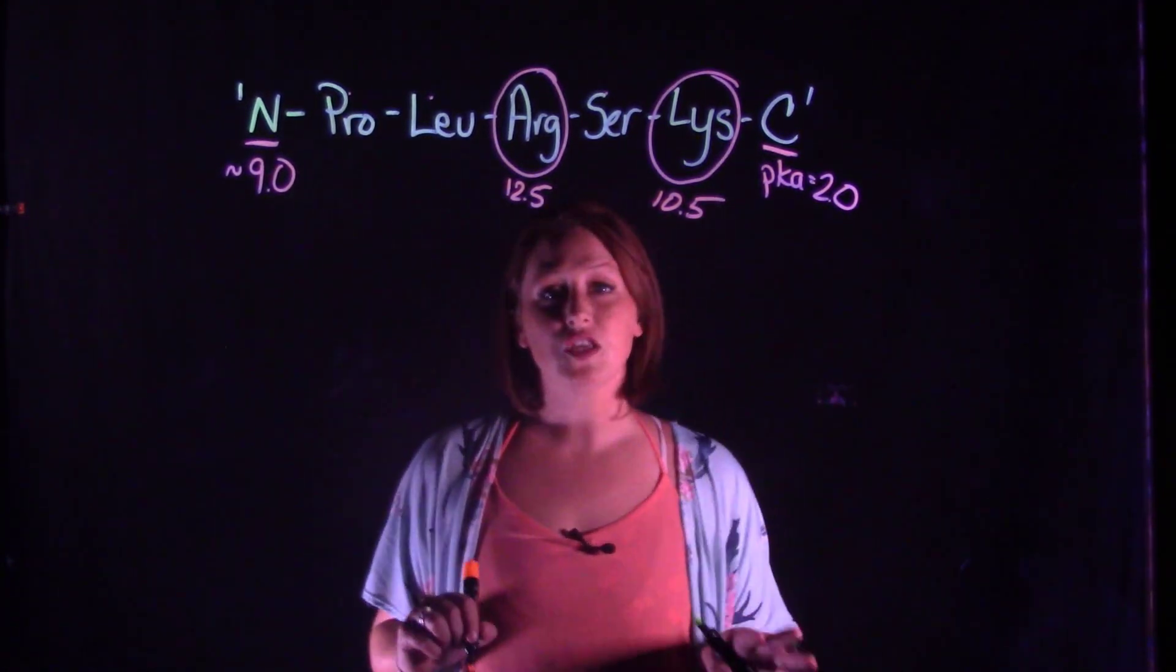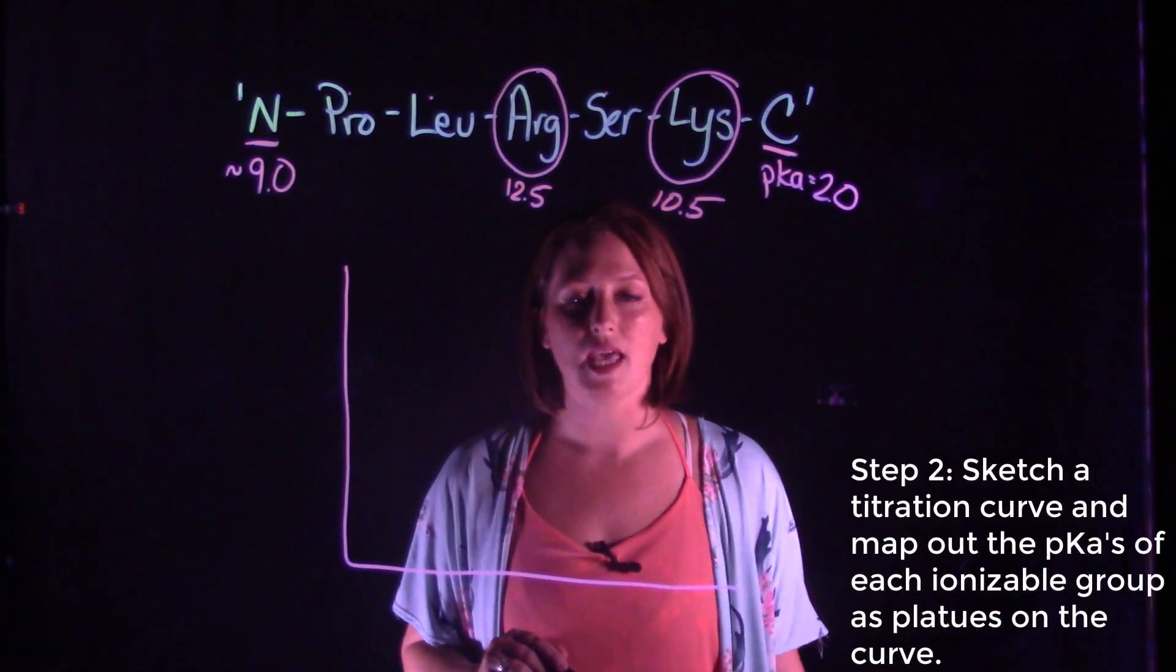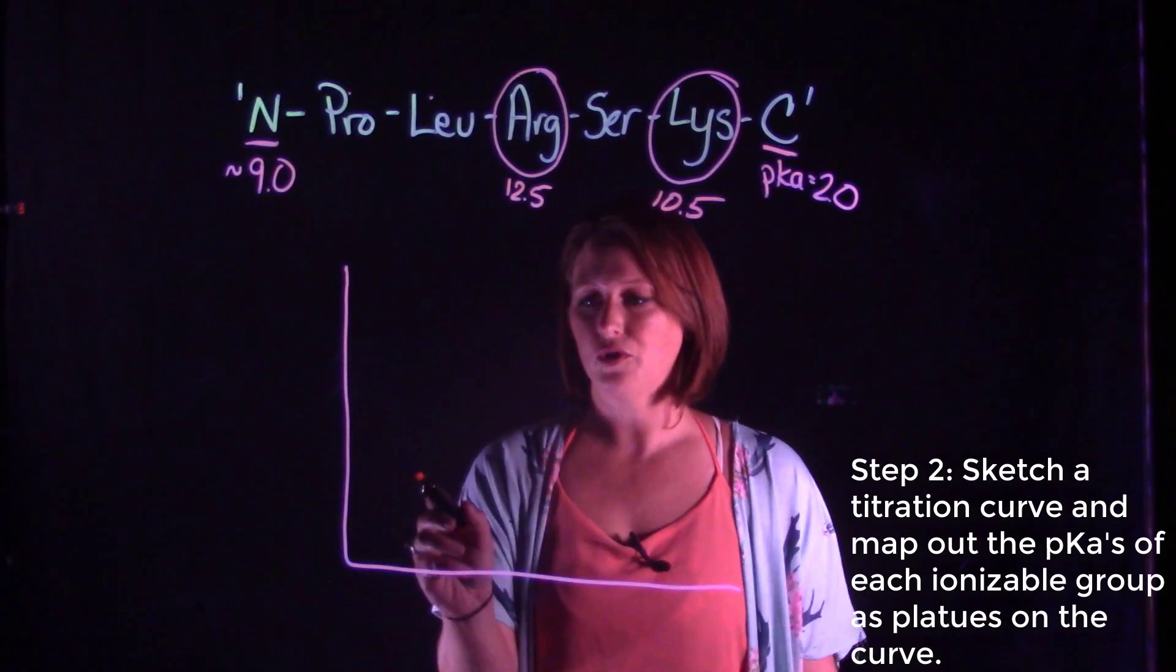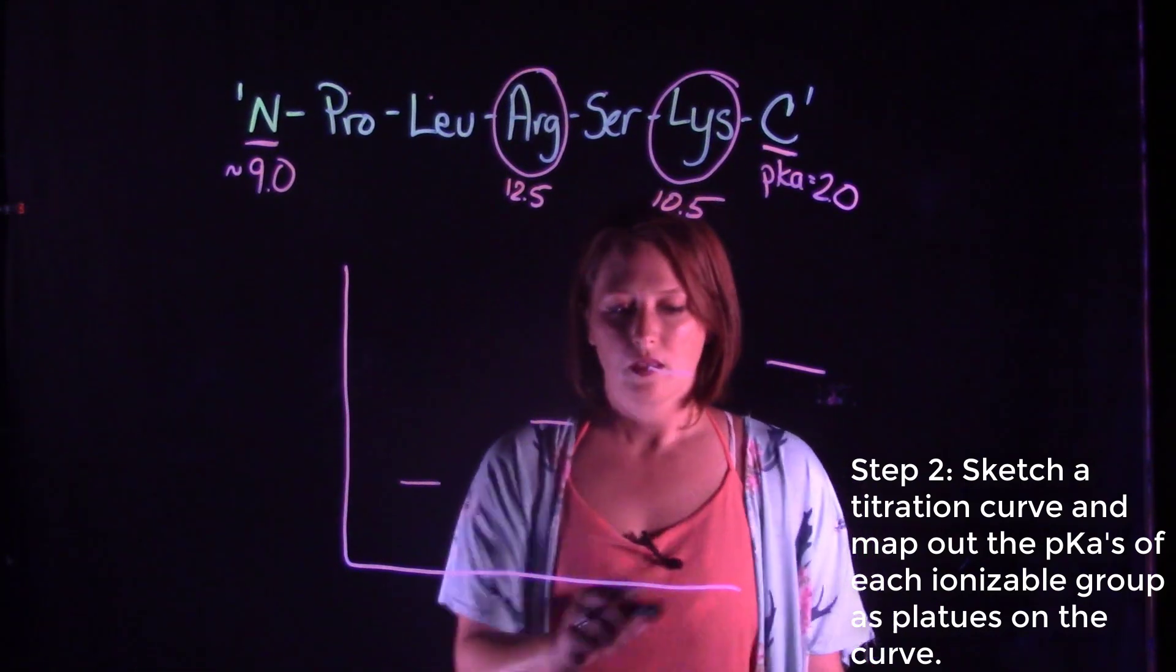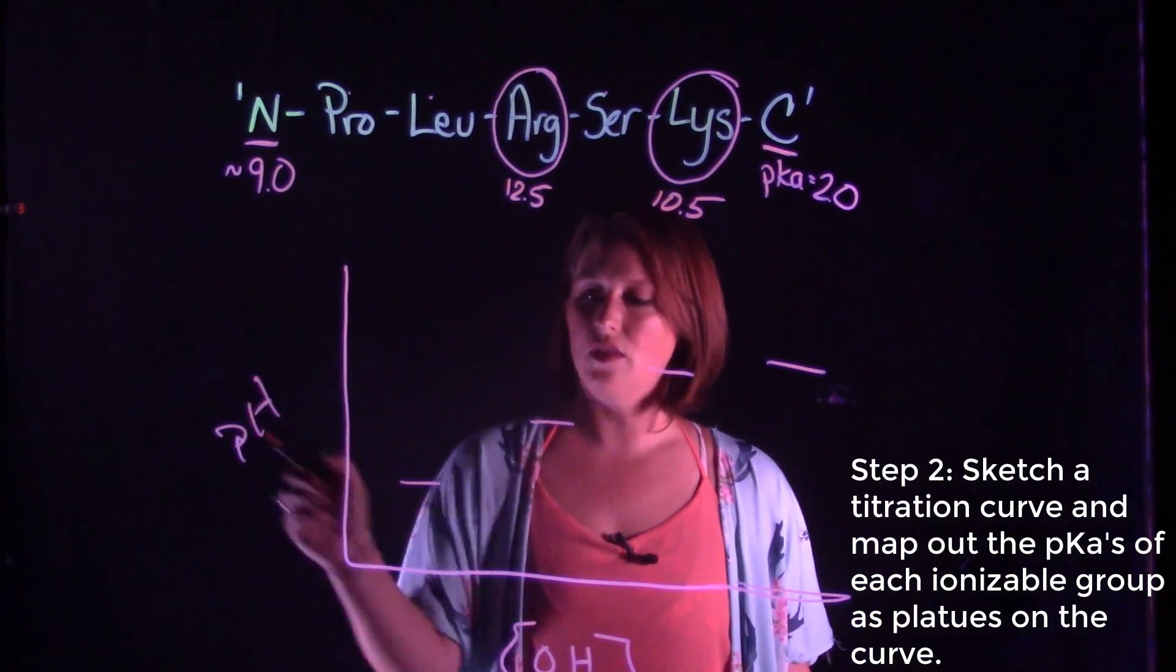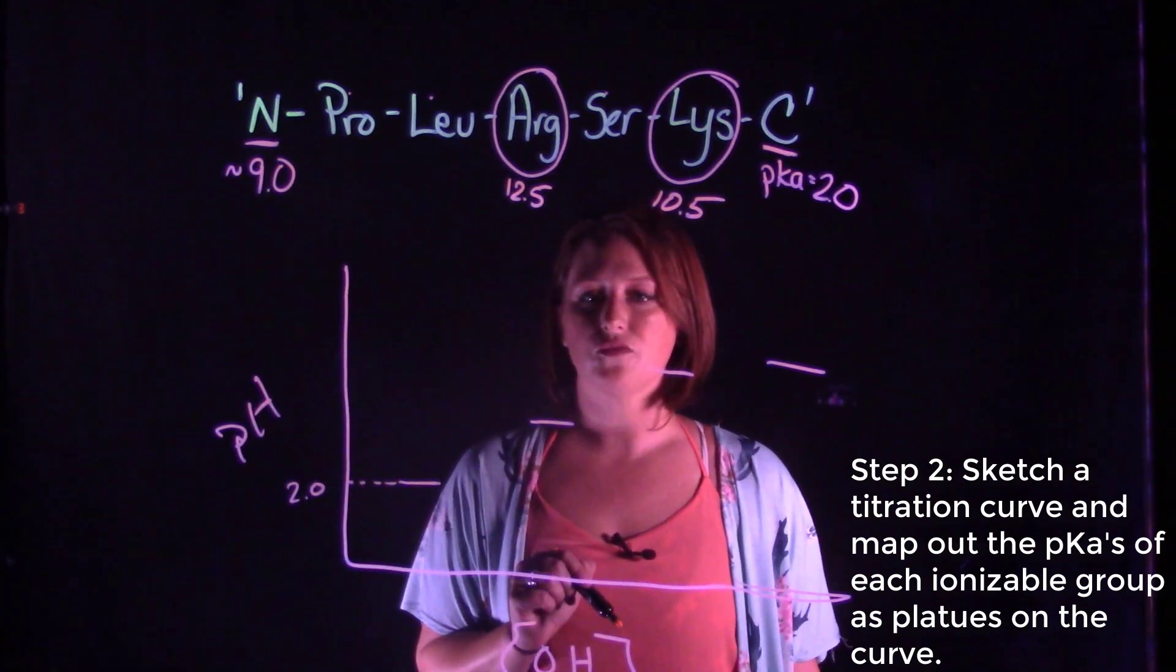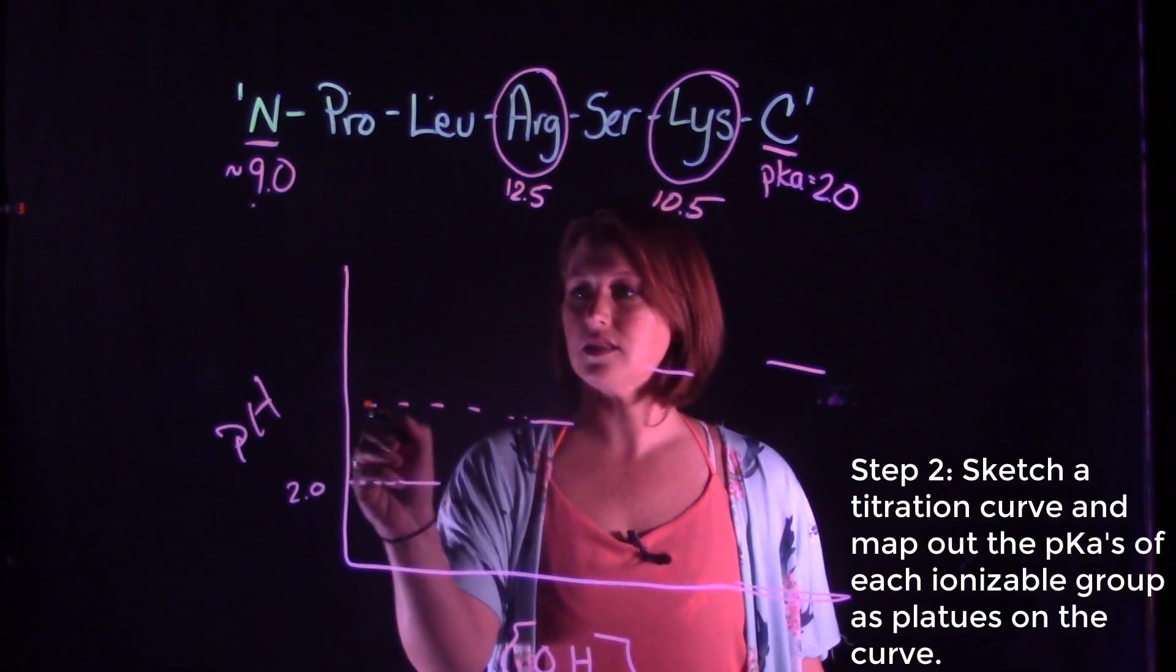So now for step two, we are going to sketch and rank these pKa's in increasing order from acidic to basic. We have four ionizable groups, so we should have four plateaus. If we have increasing hydroxide and pH on this side, our first most acidic pKa is that C-terminus, which is a pH of 2.0.